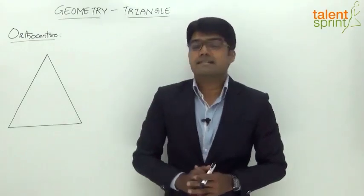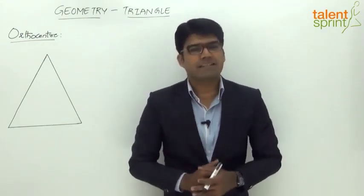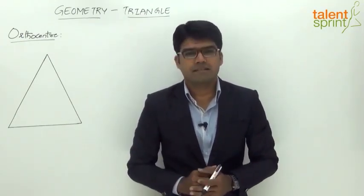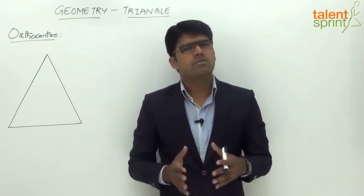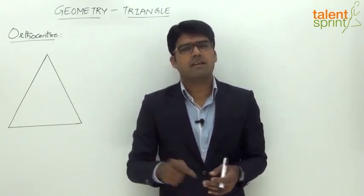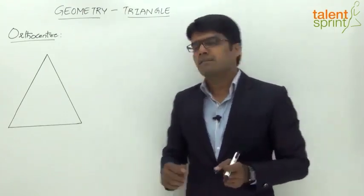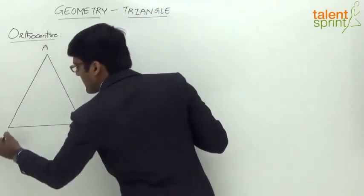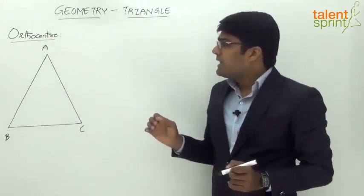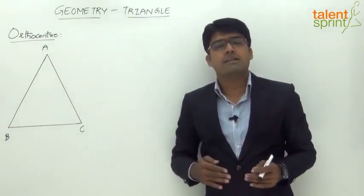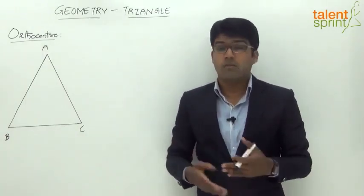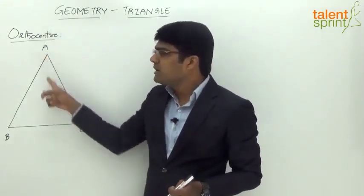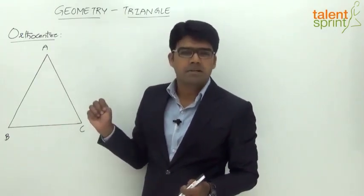The next center we are going to look at is the orthocenter of a triangle. The orthocenter is the point of intersection of the altitudes of the triangle. An altitude is a perpendicular drawn from a vertex of a triangle to the opposite side. There will be three altitudes in a triangle.